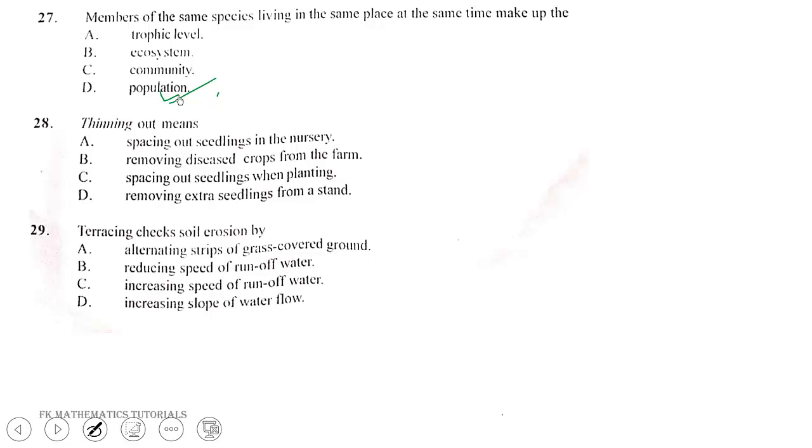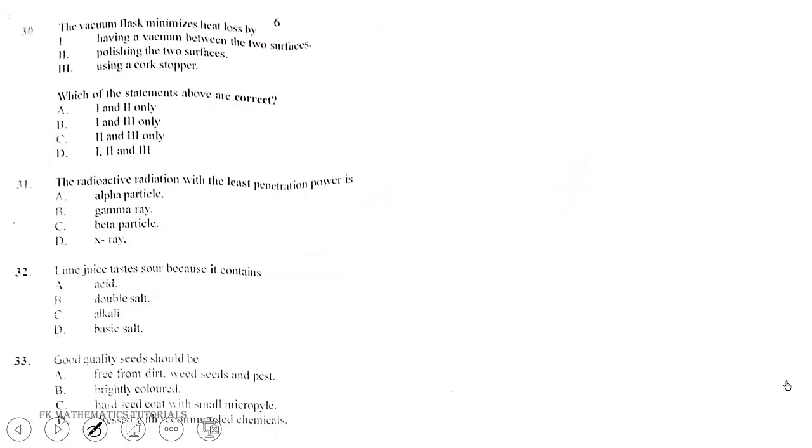Question 29. Thinning out means removing extra seedlings from a stand. Question 30. Terracing checks soil erosion by reducing the speed of runoff water. The vacuum flask minimizes heat loss by having a vacuum between the two surfaces, polishing the two surfaces, and using a cork stopper. The correct answer is D, I, II, and III.